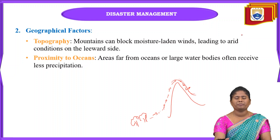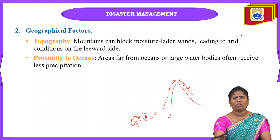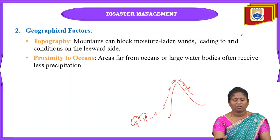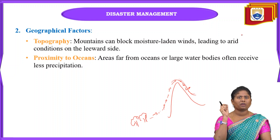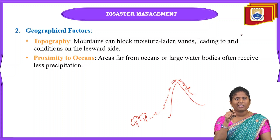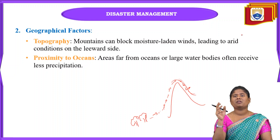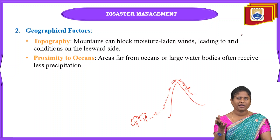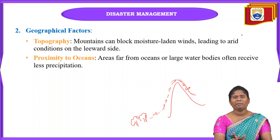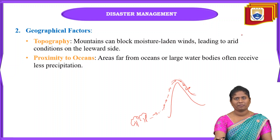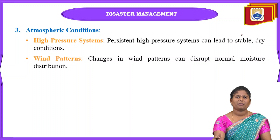Another geographical factor is proximity to oceans. Areas far from oceans, lakes, or other water bodies tend to have very little precipitation. Clouds collect water from the ocean and travel to other areas to release it as precipitation, but some areas receive very little of this precipitation even when clouds form over large water bodies.